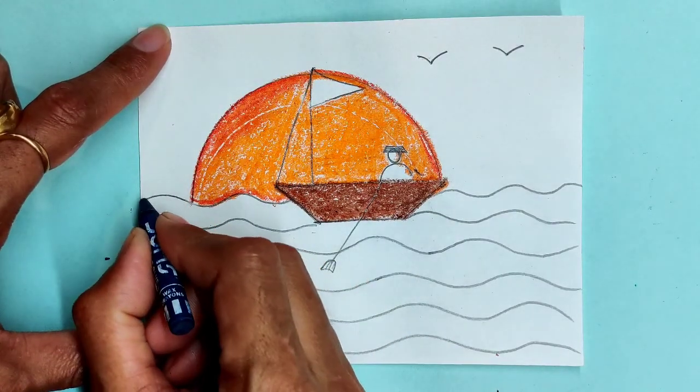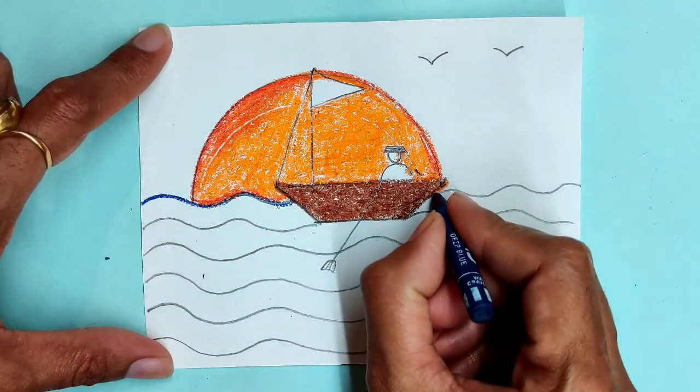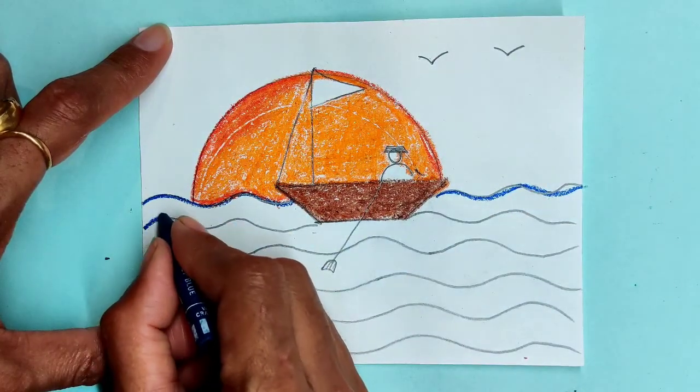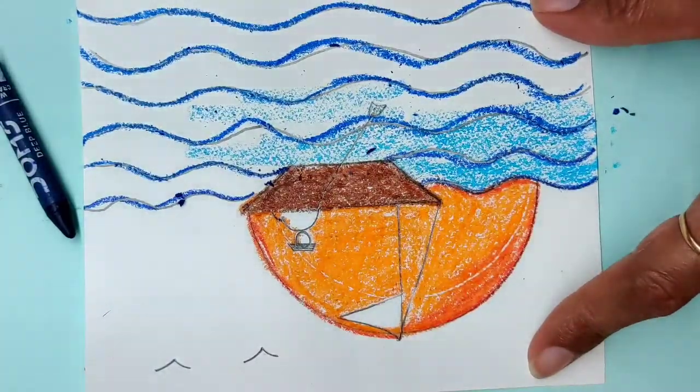Take dark blue color and draw an outline on the wavy lines. Fill light blue color in the water area.